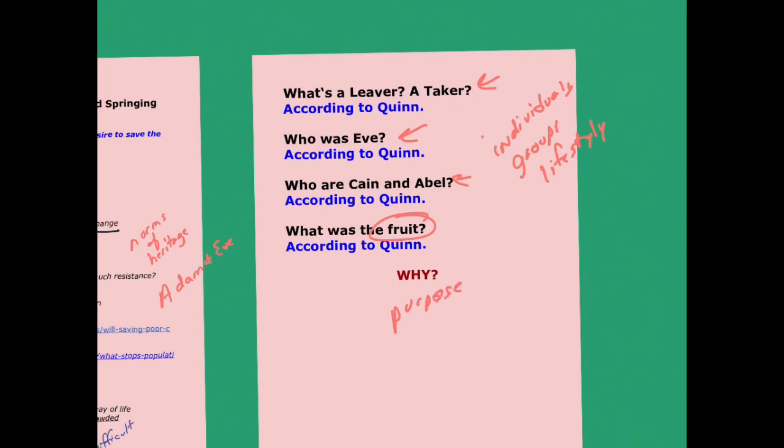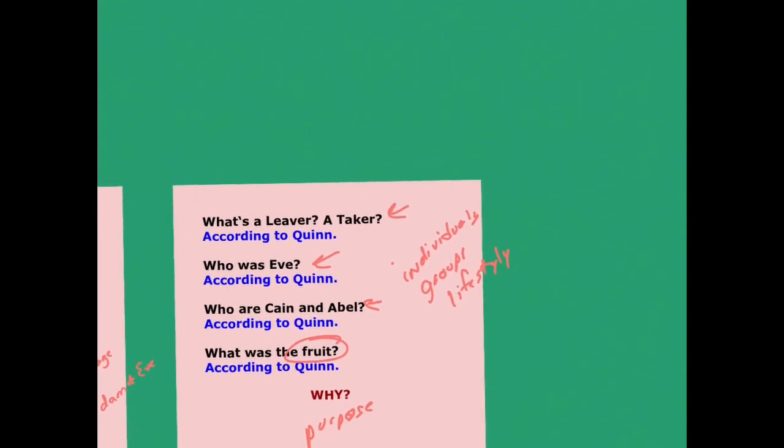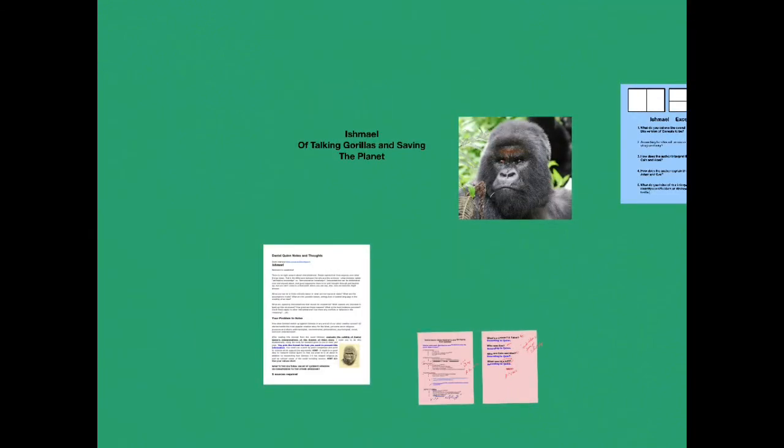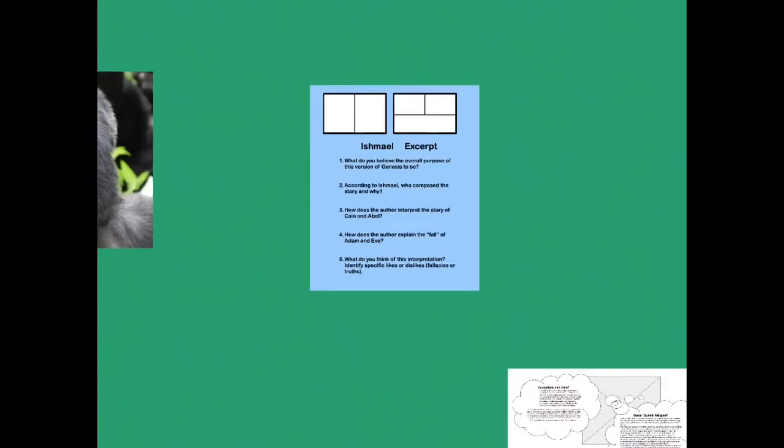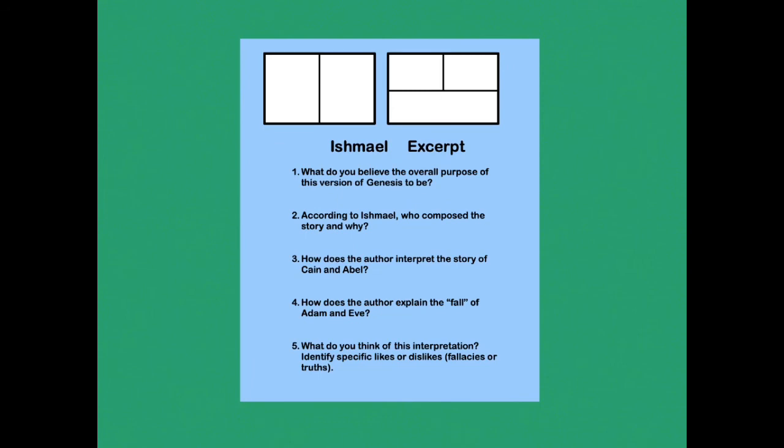Go ahead and give it a read. And again, what you're going to do as you read through this is focus on answering those four questions or those five questions that I've kind of set out for you at the beginning stage of this video. So why do you believe the overall purpose of this version of Genesis to be? According to Ishmael, who composed the story? How does the author interpret the story of Cain and Abel? How does the author explain the fall? And then finally, what do you think of the interpretation? What are your likes? What are your dislikes? What are the issues that you might have with it?